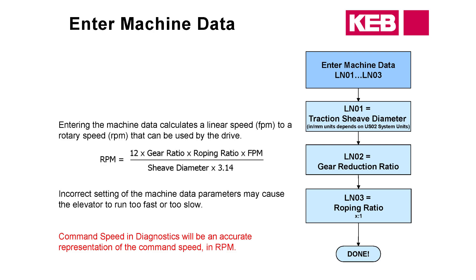Check to make sure you're going the correct speed. Run the car on inspection and look at the command speed, then look at the motor speed — the feedback coming back from the encoder — and make sure those two are close. If they're off by a factor, you may have to adjust your shiv diameter or gear reduction ratio.